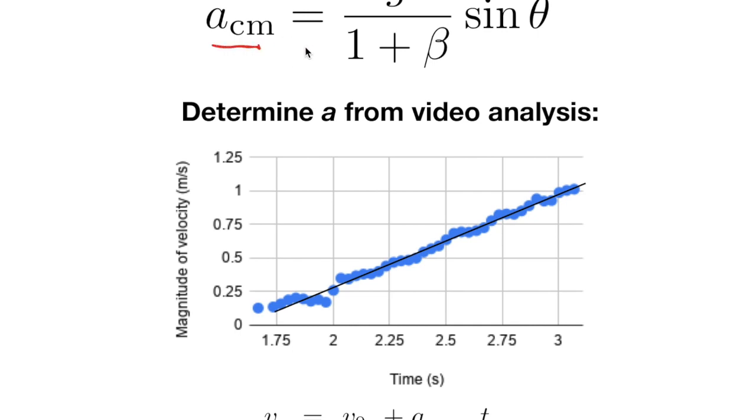The acceleration of the center of mass is in terms of the gravitational acceleration, the angle of the ramp, where it's the standard angle at the bottom, and then 1 plus beta, where beta is this constant in the moment of inertia.